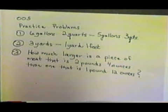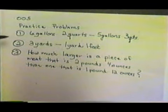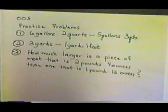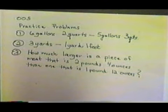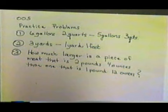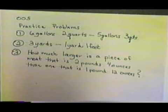Let's do some practice problems that involve subtraction of denominate numbers. Number one: 6 gallons 2 quarts, subtract 5 gallons 3 quarts. Number two: 3 yards, minus 1 yard 1 foot. Number three: how much larger is a piece of meat that is 2 pounds 4 ounces than one that is 1 pound 12 ounces?